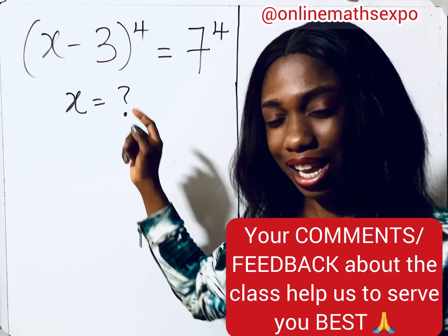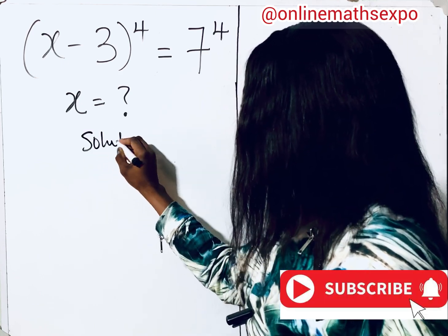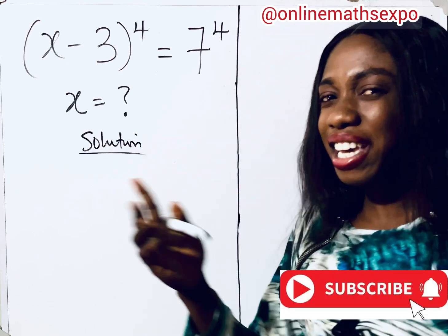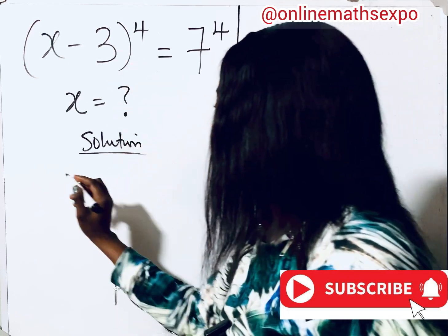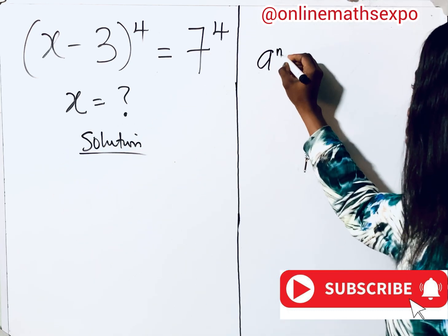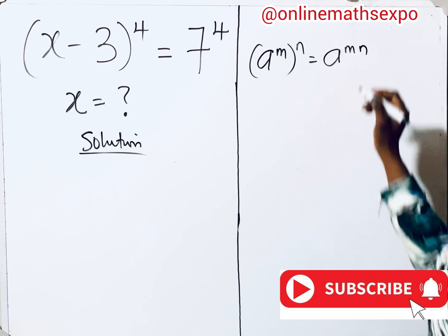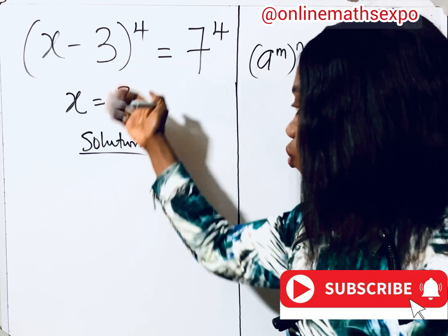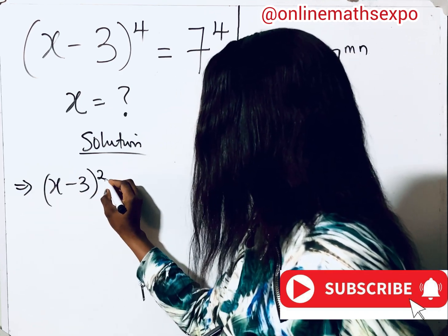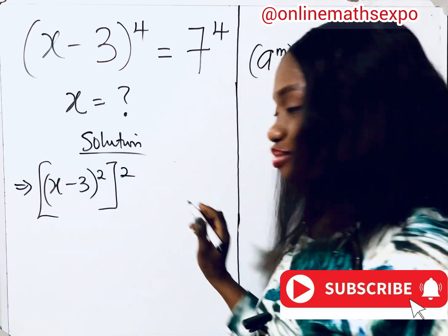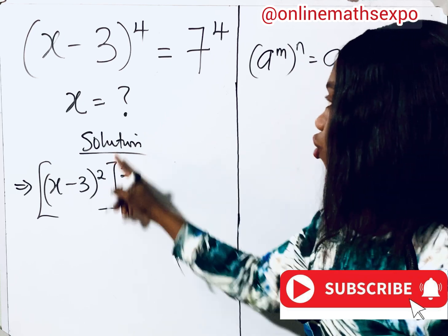I'm going to teach you how to solve this kind of question each time you see it in an exam. We begin with the solution. Remember, it's very simple, so relax. To answer this, remember this rule: when you have a to the power of n, to the power of n, it is the same as a to the power mn. So we can write this as x minus 3, raised to the power of 2, then raised to the power of 2. If you multiply those two powers, it returns you to 4.